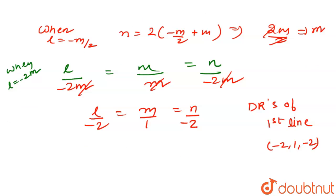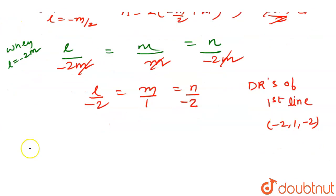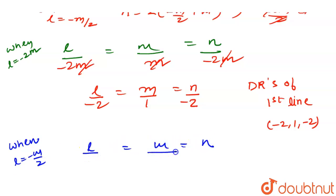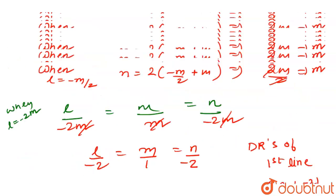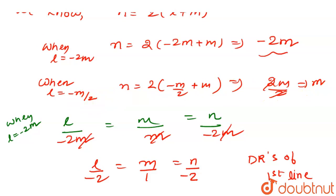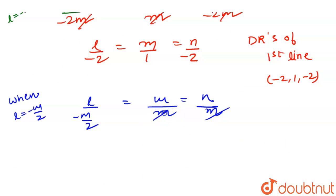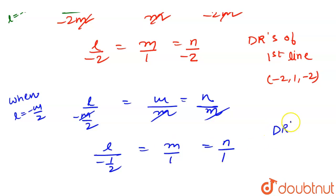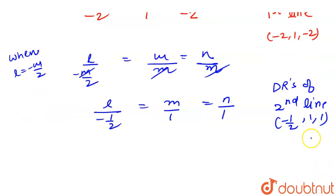For the second case, l = −m/2, m = m, and n = m. Cancelling m gives l/(−1/2) = m/1 = n/1. So the direction ratios of the second line are (−1/2, 1, 1).